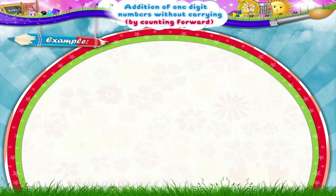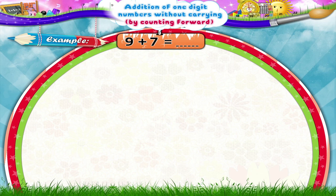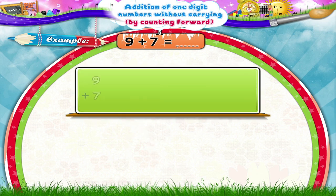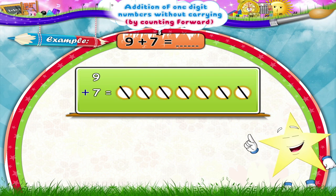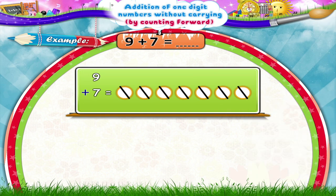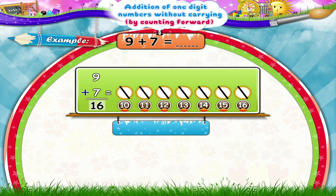Let's solve the next example. 9 plus 7 equals to dash. We have to add 7 to 9. So how many lines should we draw, Stari? Yes, 7 lines. Now we have to start counting after 9. Let's count. 10, 11, 12, 13, 14, 15, 16. Thus, 9 plus 7 equals 16.